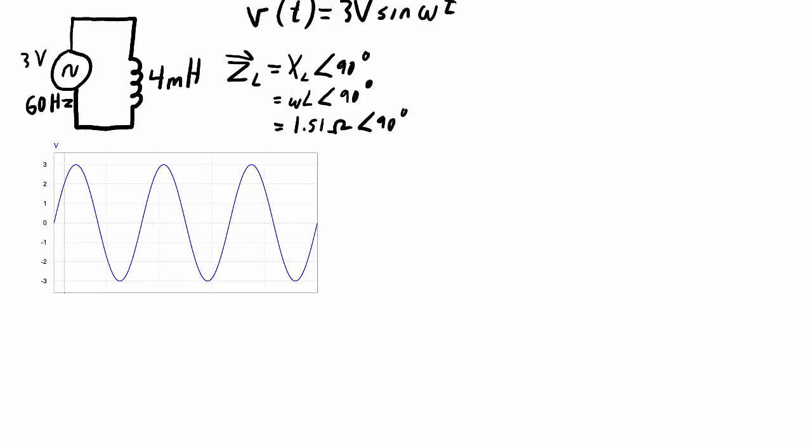With that impedance given, I can now figure out what the current is. The current through the inductor will be the voltage applied across the inductor - the peak voltage with a phase angle of zero degrees divided by the impedance of that inductor, 1.51 ohms at 90 degrees. Calculate this out and I get 1.99 amps phase angle minus 90 degrees.